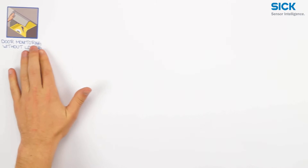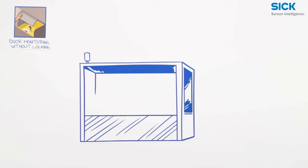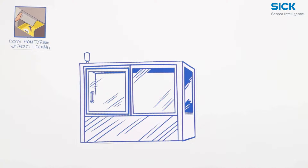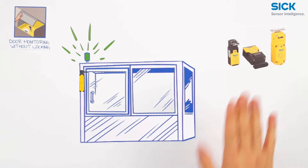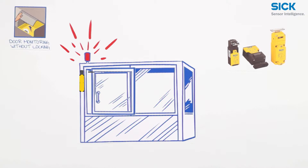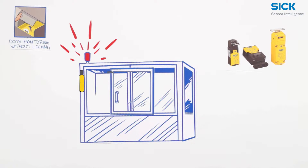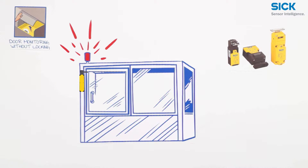To monitor protective doors you can use electromechanical safety switches with a separate actuator. They switch the machine off if the door is opened, but also provide the retaining force that keeps the door closed in case of light vibrations.